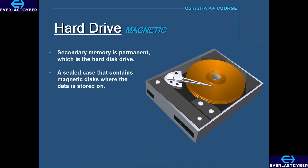The hard disk drive is a sealed case that contains magnetic disks, and these disks are where the actual data is stored. These disks rotate at high speeds, and as they do, the actuator arm will either write data to the disks or read data from the disks, depending upon what the user wants to do.